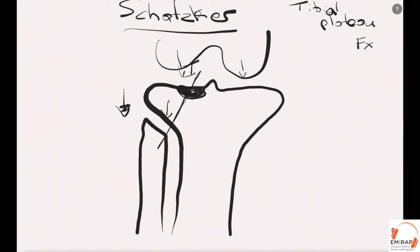Now type four is an important one because that is actually on the medial side and has a pretty bad prognosis. So that's a type four. Type five is when you've got both the lateral and the medial side involved. So that's a type five.